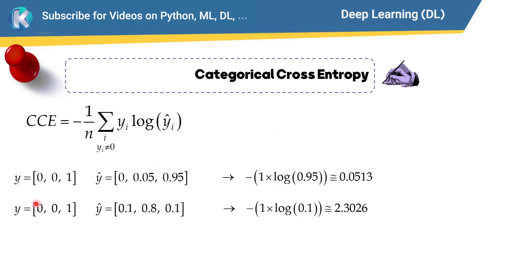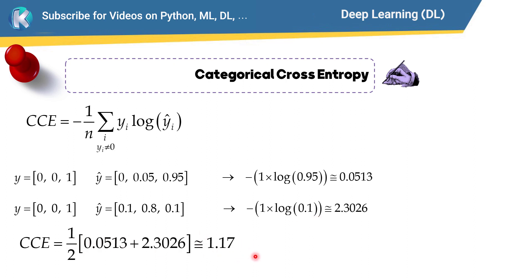Now suppose we have another data point with its true one-hot vector and prediction values. We multiply the non-zero y_i value by the natural log of the corresponding probability, which is 0.1. The formula then says we take the average — multiplying by 1/n. These are the values for each data point: this is the value for data 1, this is the value for data 2, and we take their average. That is how we calculate categorical cross entropy.